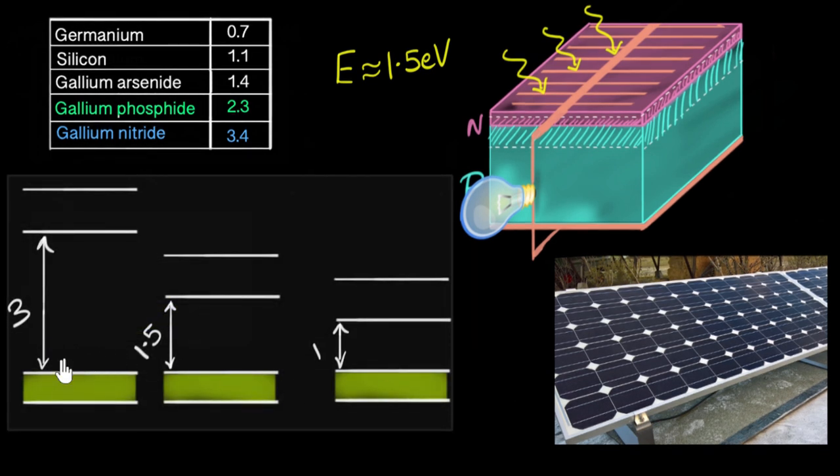All right, if we look at this one, then the photons don't have sufficient energy for the electrons to jump the band gap. And as a result, electrons will not absorb that energy. Photon will just pass through.